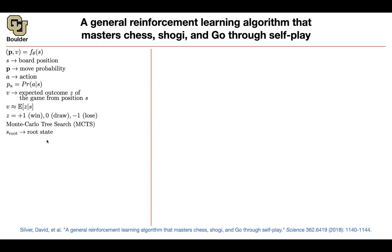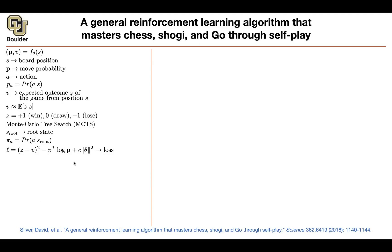You're going to start from a root state and associate some probability to the actions in the root state, coming from your Monte Carlo tree search. That gives us our loss. Z is going to help us supervise V, and pi is going to help us supervise P, with some regularization.